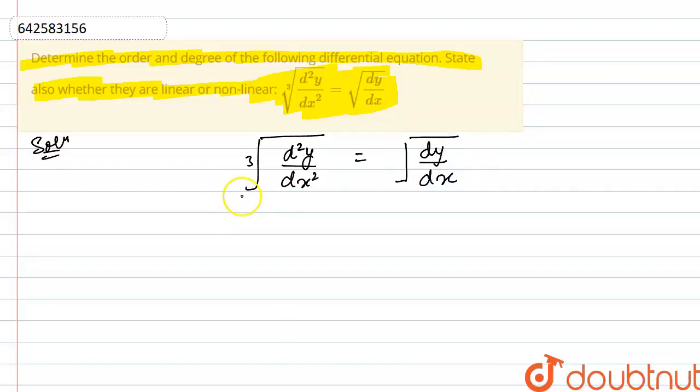Firstly take cube both the sides. Taking cube both sides, I am just simplifying this given differential equation. This will become d2y by dx square is equals to dy by dx raised to the power, this is root over of dy by dx, that means 3 by 2.